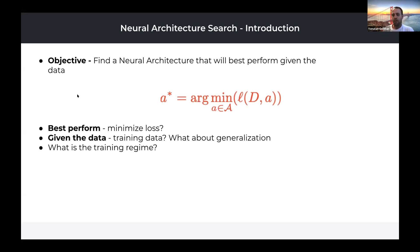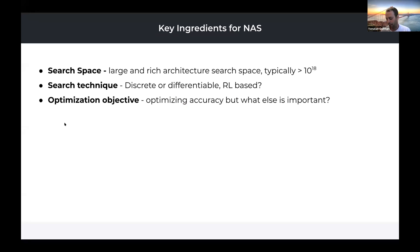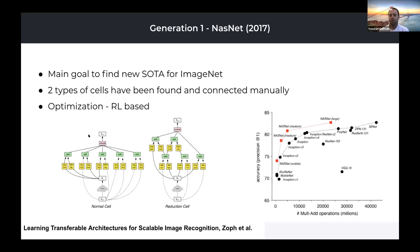To build a neural architecture search algorithm, we need three components. First, a search space — the calligraphic A from the previous slide — which should be large and rich, typically on the order of 10 to the power of 18, which is huge. Second, a search technique to navigate those huge search spaces; some techniques are discrete or differentiable, and some are based on reinforcement learning. Third, the optimization objective, defining what we want to find — whether optimizing only accuracy or also other parameters like runtime latency at inference.